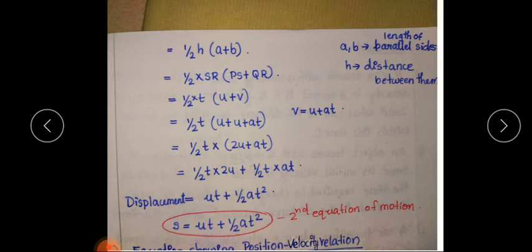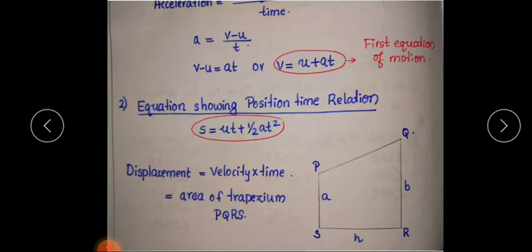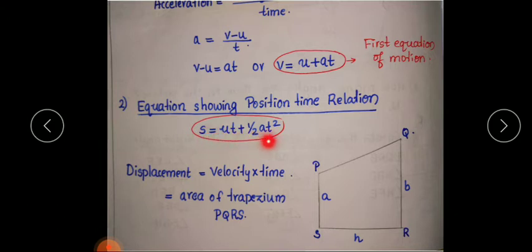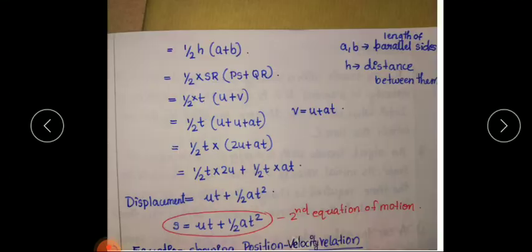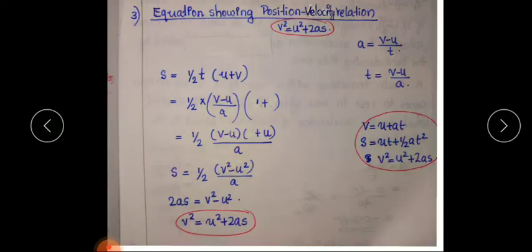This displacement is represented by the symbol S. So S = UT + ½AT². This is the second equation of motion, where S is displacement, U is initial velocity, T is time, and A is acceleration. This equation gives a relationship between position and time. Now let us derive the third equation of motion using the same graph.